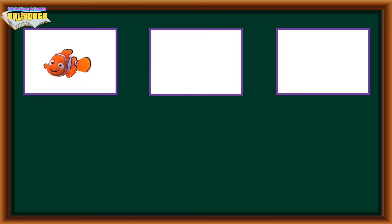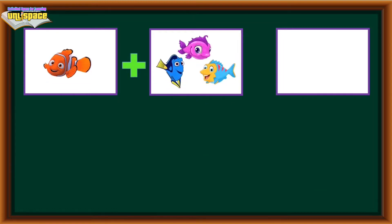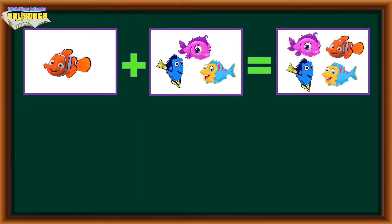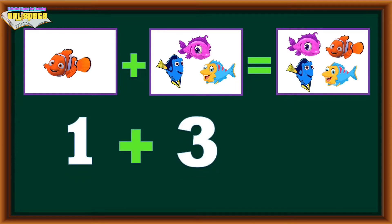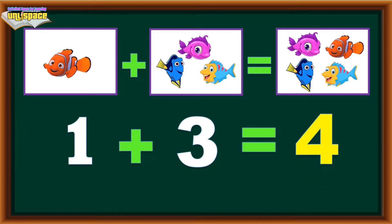1 fish plus 3 fish equals 4. 1 plus 3 equals 4.